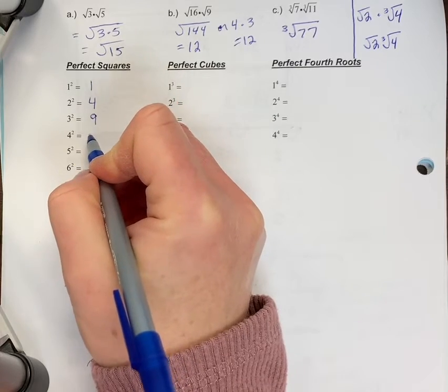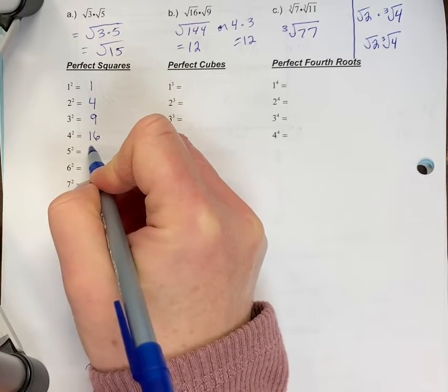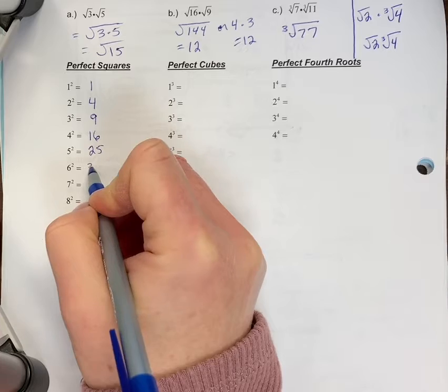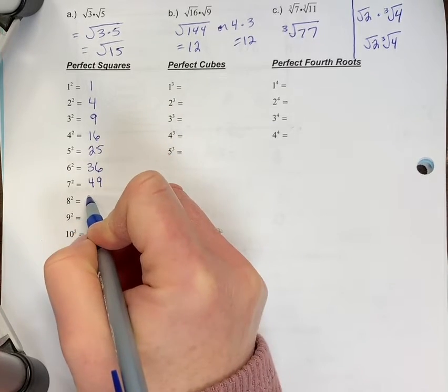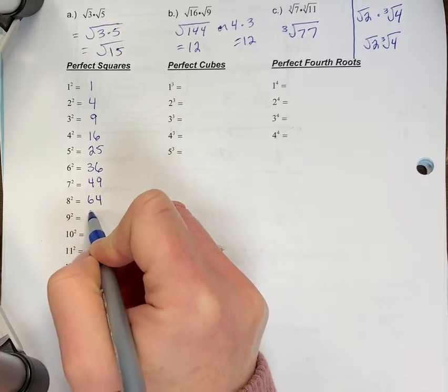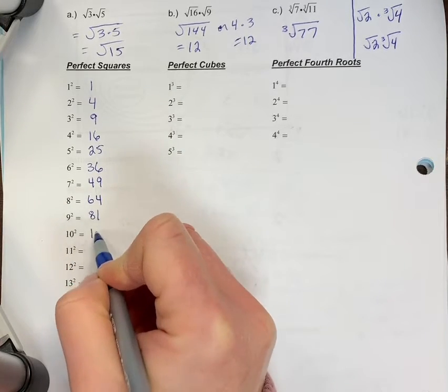So three squared is 9, 16, 25, 36, 49, 64, 81, 100.